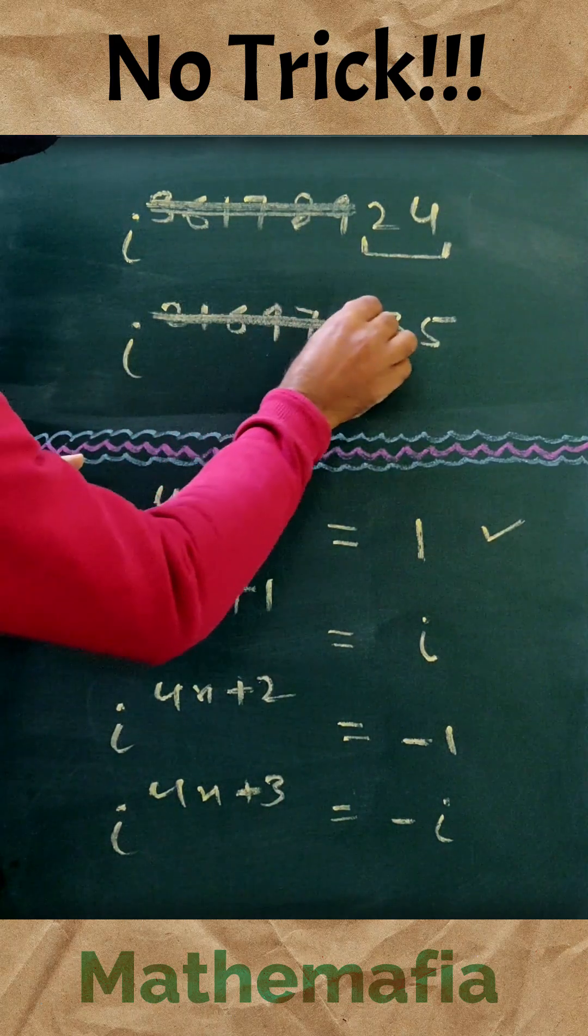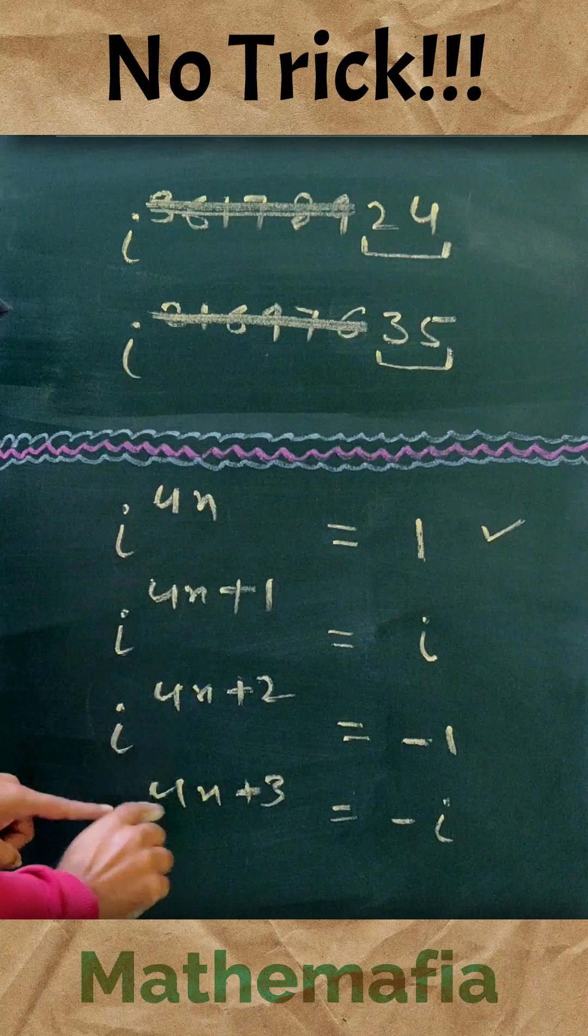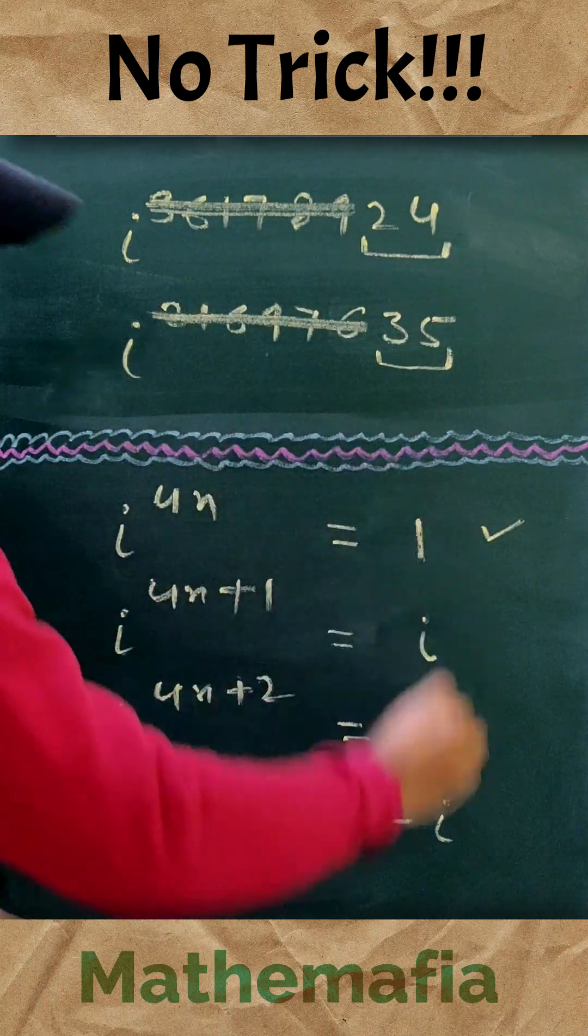So ignore all these digits. Now 35 is of the form 4n plus 3, so its value will be minus iota.